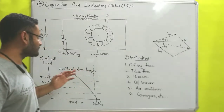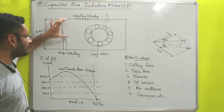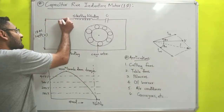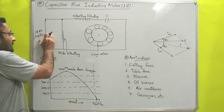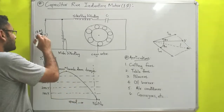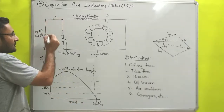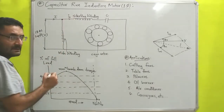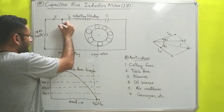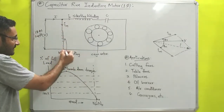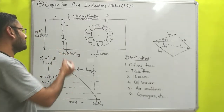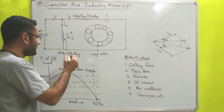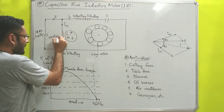Now we will discuss the construction. It has one main winding and one starting winding. Both the main winding and starting winding are connected in parallel with each other across a single phase AC supply voltage V. From the voltage source, current I flows and at the junction it divides: Is flows through the starting winding and Im flows through the main winding. The main winding is designed to have high inductance and low resistance, making it a series LR circuit.